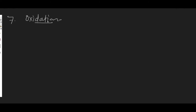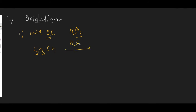If you use different reaction conditions, you get different products from the oxidation of thiols. For example, with a mild oxidizing agent such as H₂O₂, the thiol is converted into a disulfide — just as alcohol is converted into a peroxide. So thiols under mild oxidation are converted into disulfides, with water as a byproduct.